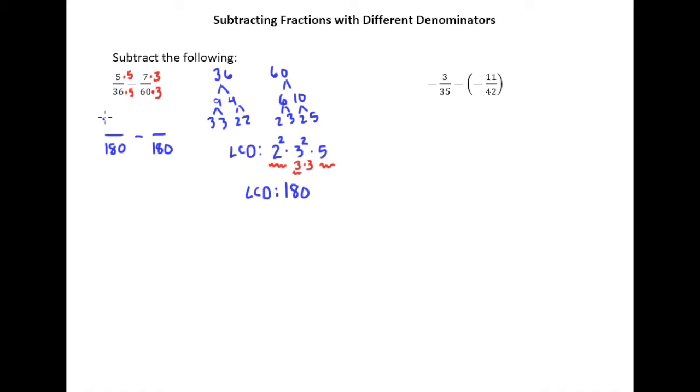So we end up with 25/180 minus 21/180. We can subtract and get 4/180. And these are both even numbers, so at the very least 2 goes into both of them. However, we can do better. It turns out that 4 also goes into 180, so we can divide the top and the bottom by 4. So what we end up with is 1, and when you take 180 divided by 4, you end up with 45. So we get 1/45 is our answer for this first example.